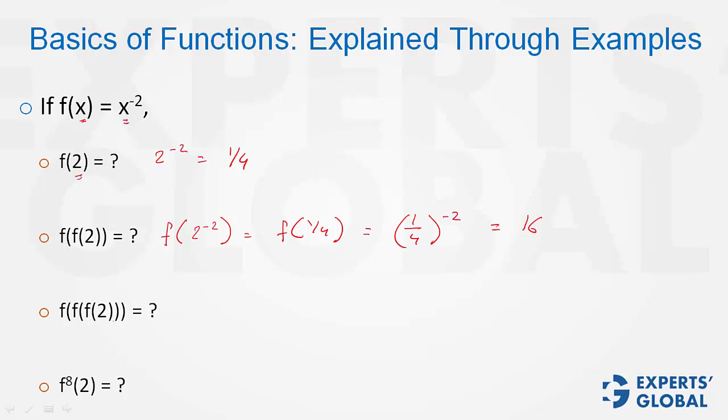Look at this one now. Either do it step by step or realize that we just found f of f(2), which is 16. So now we just need to find f of 16, because f of f(2) is 16 we just found. So f of f of f(2) would be just f of 16, and therefore 16 raised to power minus 2, or 1 upon 256 is the answer.